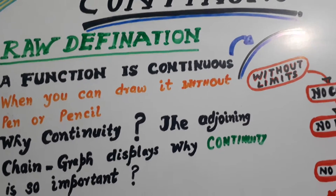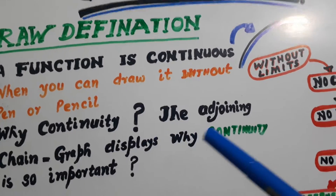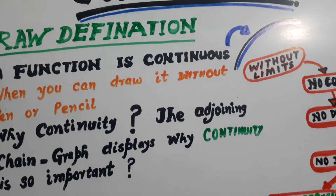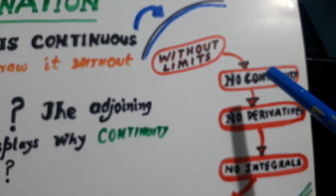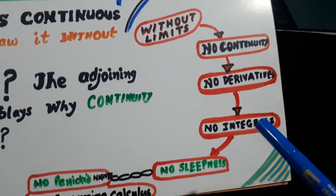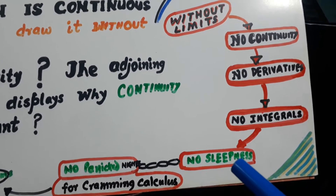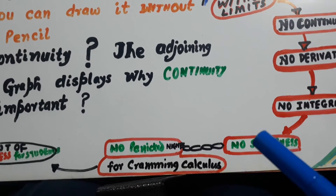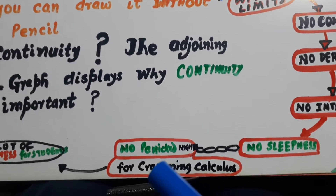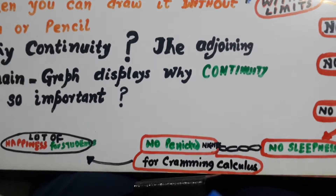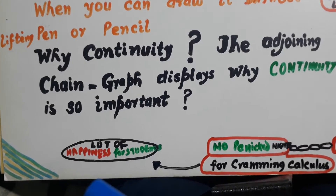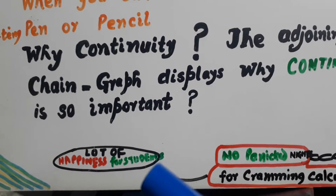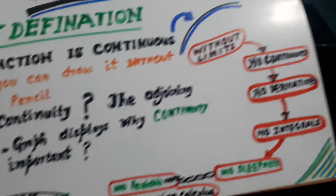Why continuity? The adjoining chain graph displays why continuity is so important. Here is the chain: without limits, no continuity. When there is no continuity, no derivatives. When there are no derivatives, no integrals. When there are no integrals, no sleepless nights. It means there is no panicked night for craving calculus — a lot of happiness for students. This is why it is very, very important. It gives you happiness.